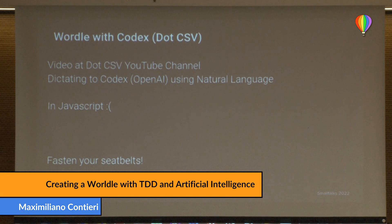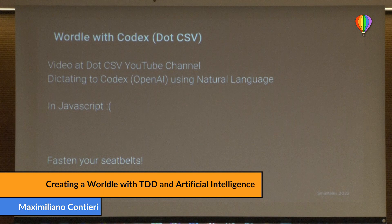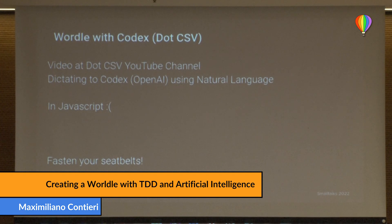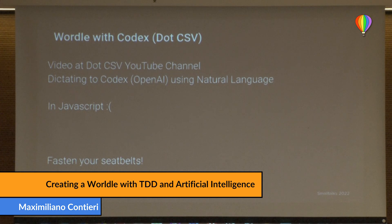I'm going to transcribe the version of the Wordle made on that channel. I strongly recommend watching the video — it's in Spanish and has more detail. The tool used is Codex, which understands many different natural languages, not just Spanish or English. Codex is a GPT-3 transformational model from OpenAI that generates code from natural language — similar to Copilot, which I'll mention later.